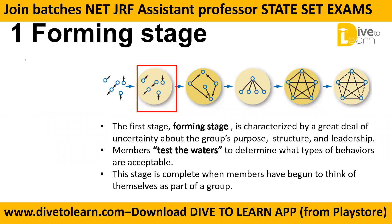The forming stage is characterized by a great deal of uncertainty. Every group member is going in a different direction regarding the group's purpose, structure, and leadership. Members test the waters to determine what types of behaviors are acceptable. This stage is complete when members have begun to think of themselves as part of the group.